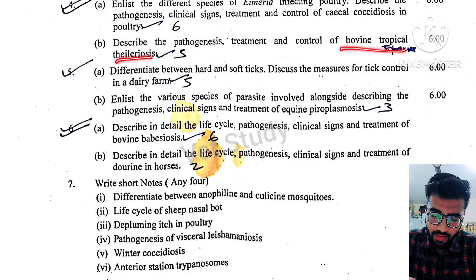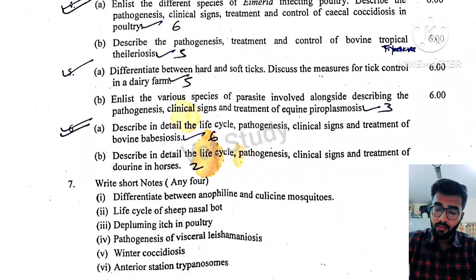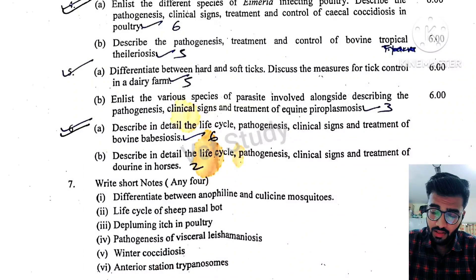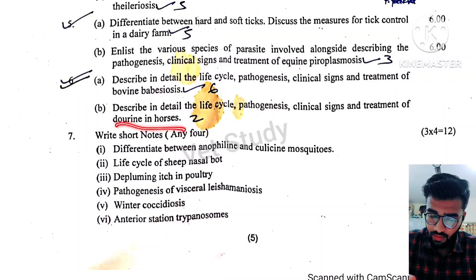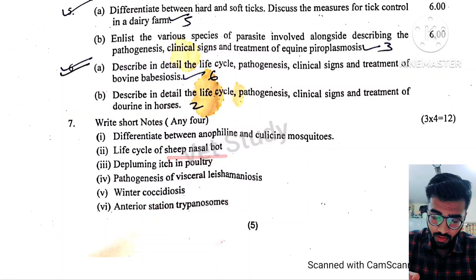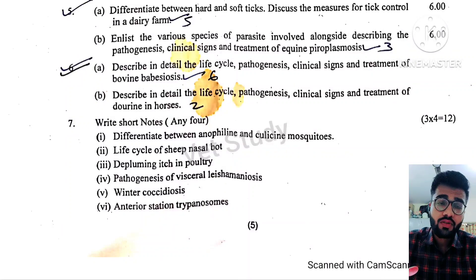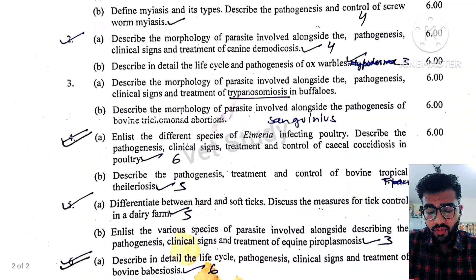Besides that, pathogenesis and treatment of bovine tropical theileriosis was asked. The difference between hard tick and soft tick is also a very important question. Tick control methods were also asked. Equine pyroplasmosis — enlist various species of parasites involved alongside pathogenesis, clinical signs and treatment. Bovine babesiosis and dourine in horses were also listed. Focus on the frequently repeated questions and prepare others superficially.